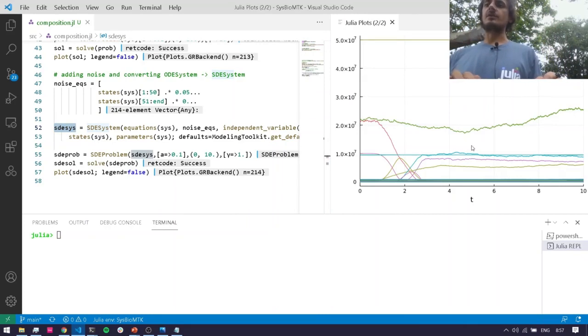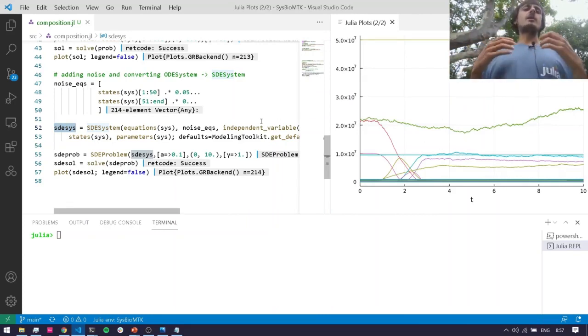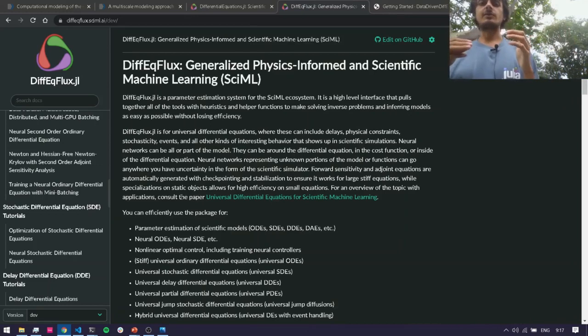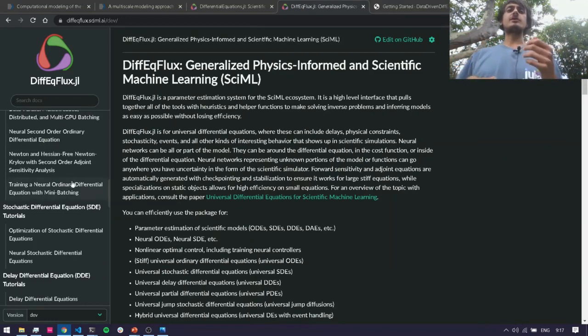Then when I solve this, you can see here that we get our stochastically solved problem and you can see the noise here. This is just an example of what a biological modeler might want to do as they start building models in modeling toolkit. The two packages that I really wanted to reference to show how much more there is to the ecosystem: